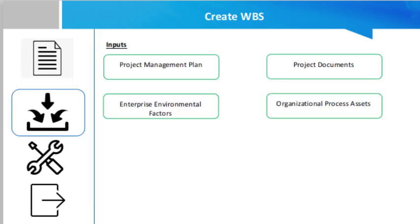The inputs for this process start with the project management plan, which is one of the major components of project management. The scope management plan specifies how to create the WBS from the detailed project scope statement, focusing on how the project scope is defined, developed, monitored, controlled, and verified. Based on these features, the WBS will be monitored, maintained, and approved.